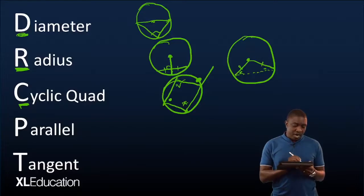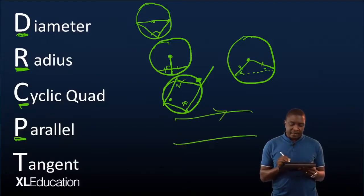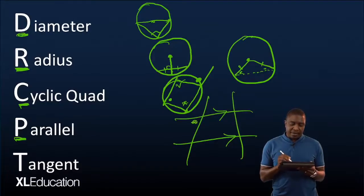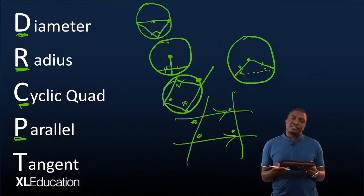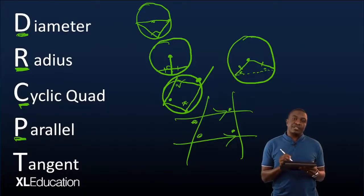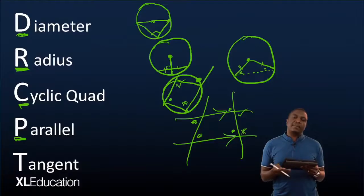When you are done with the cyclic quad, go ahead and look at any parallel lines. If there are parallel lines, this angle here is equal to that. Remember, whatever you are going to state, it needs a reason. These two angles here are supplementary.